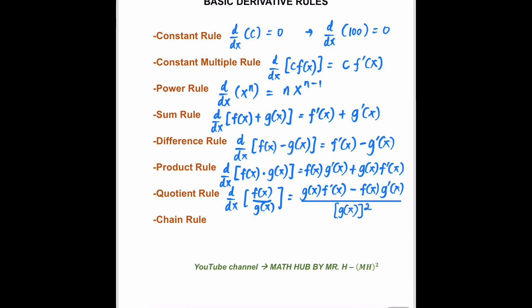Our last rule is what we call the chain rule. For example, we have d/dx of f(g(x)). This will be equal to f prime of g(x) times the derivative of the inside, which is g prime of x. These are the basic derivative rules that we will be applying in answering a few examples.